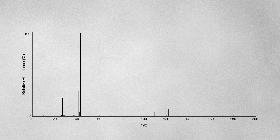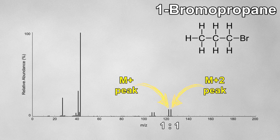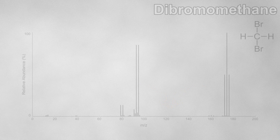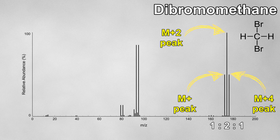Let's look at another mass spectrum. This one has an M+ peak at 122 and an M+2 peak at 124 in a 1 to 1 ratio, indicating the presence of a bromine atom. The molecule here is 1-bromopropane, so the peak at 122 is due to bromine-79 and the peak at 124 is due to bromine-81. If there were two bromine atoms in the molecule, we'd get an M+4 peak, with three peaks in a 1 to 2 to 1 ratio due to the possible combinations of the bromine isotopes.